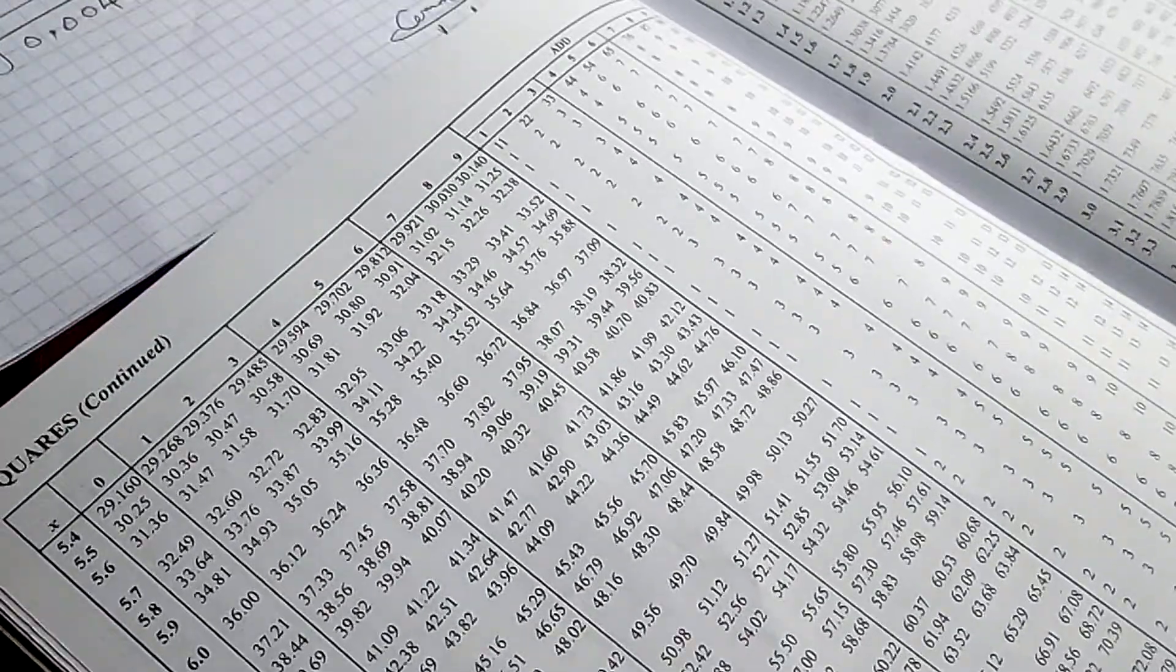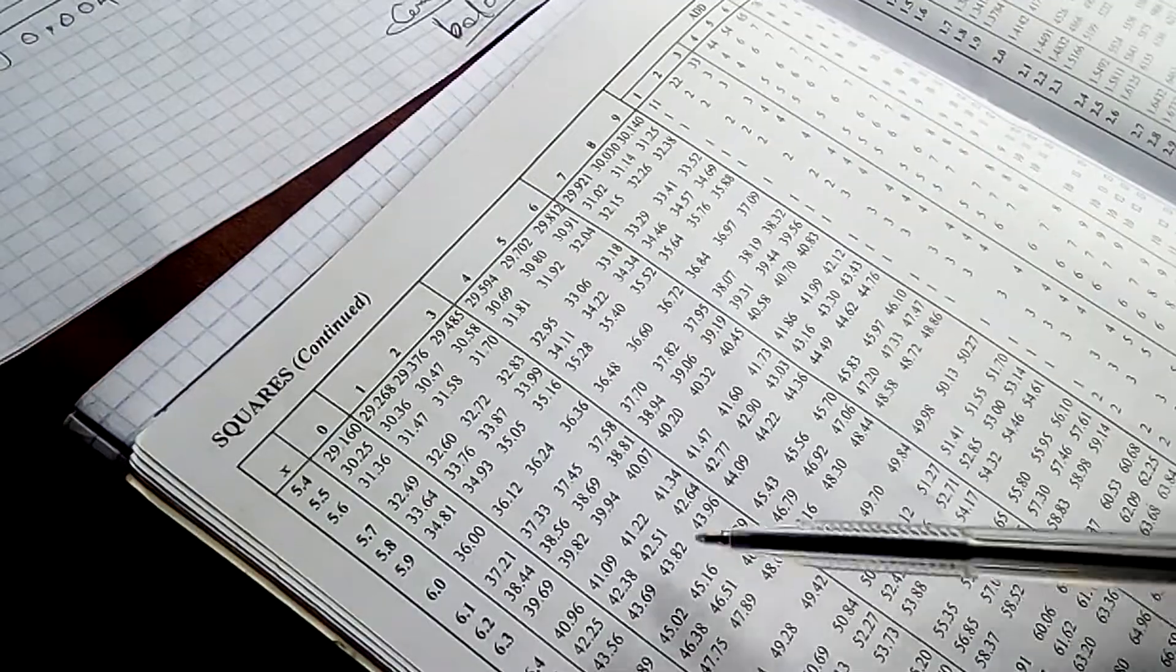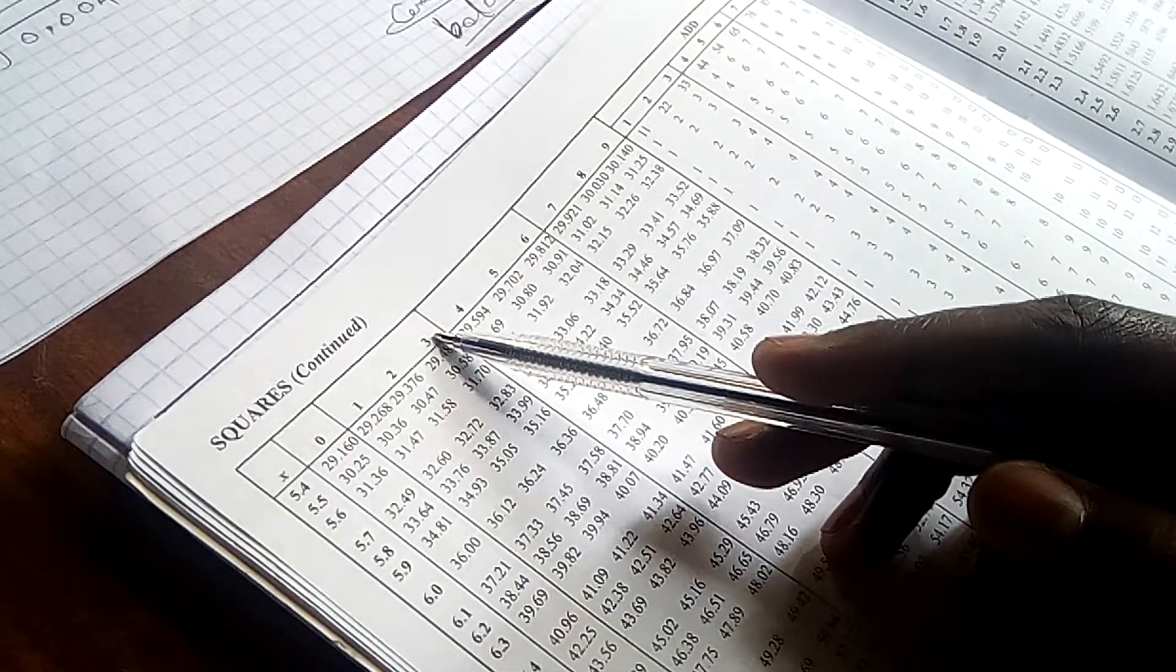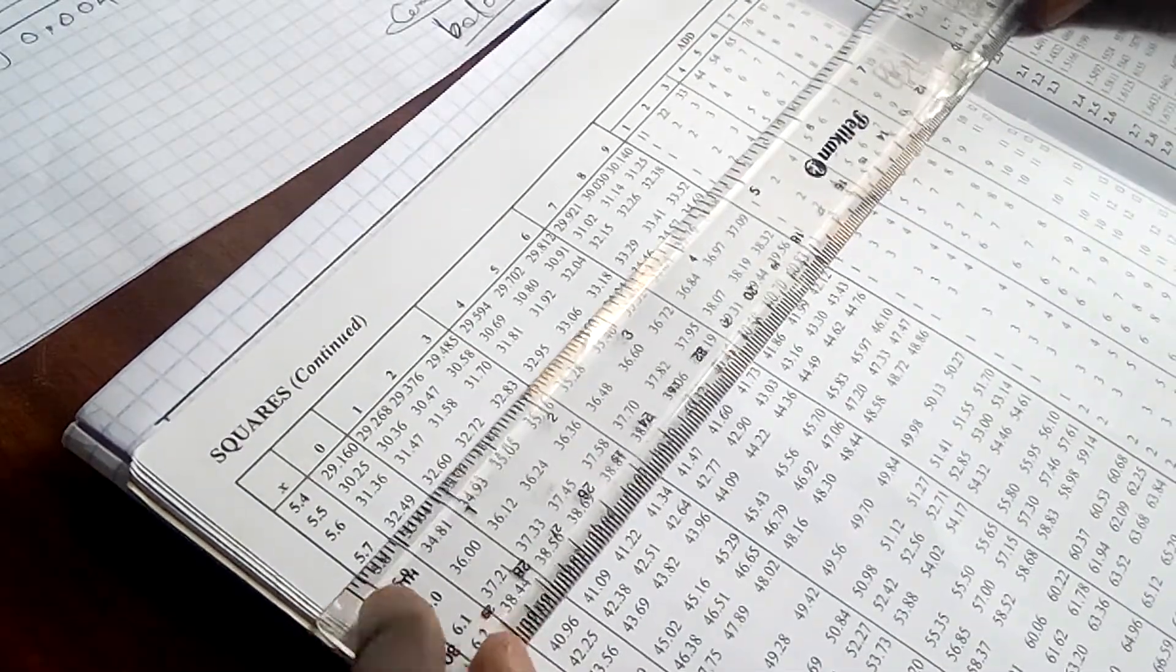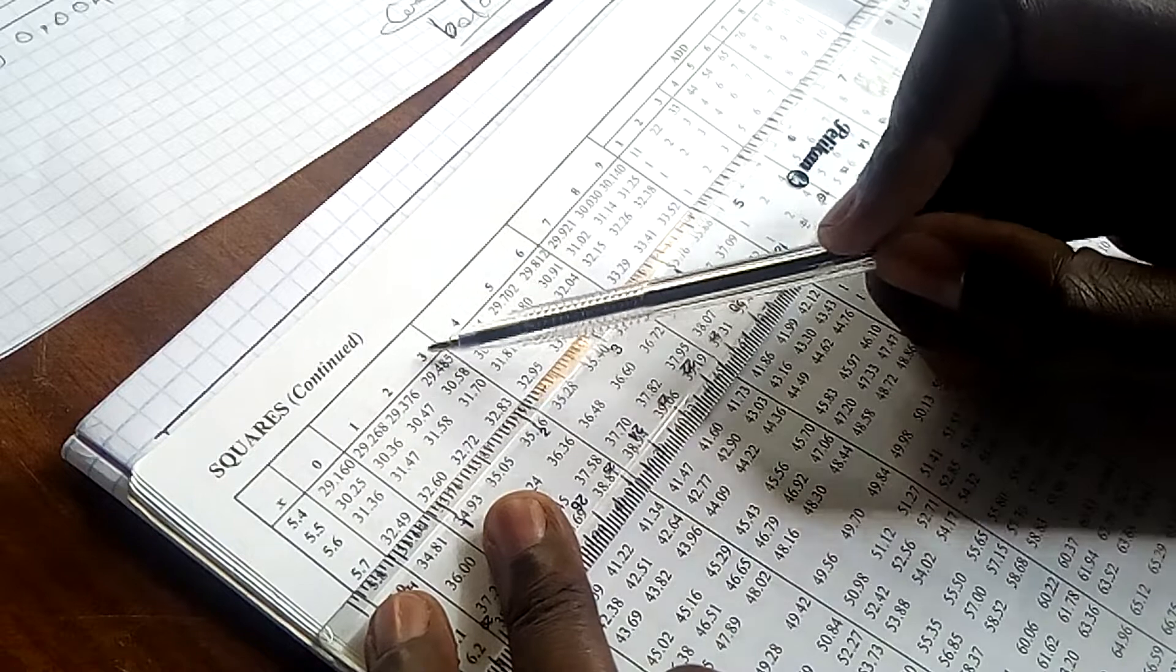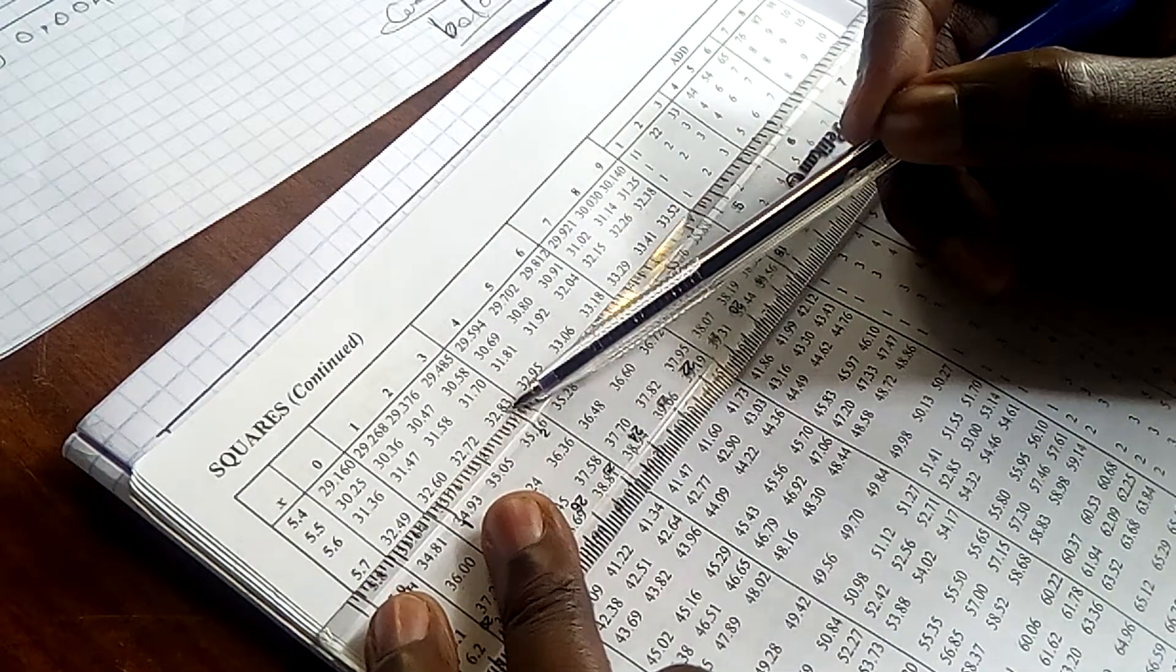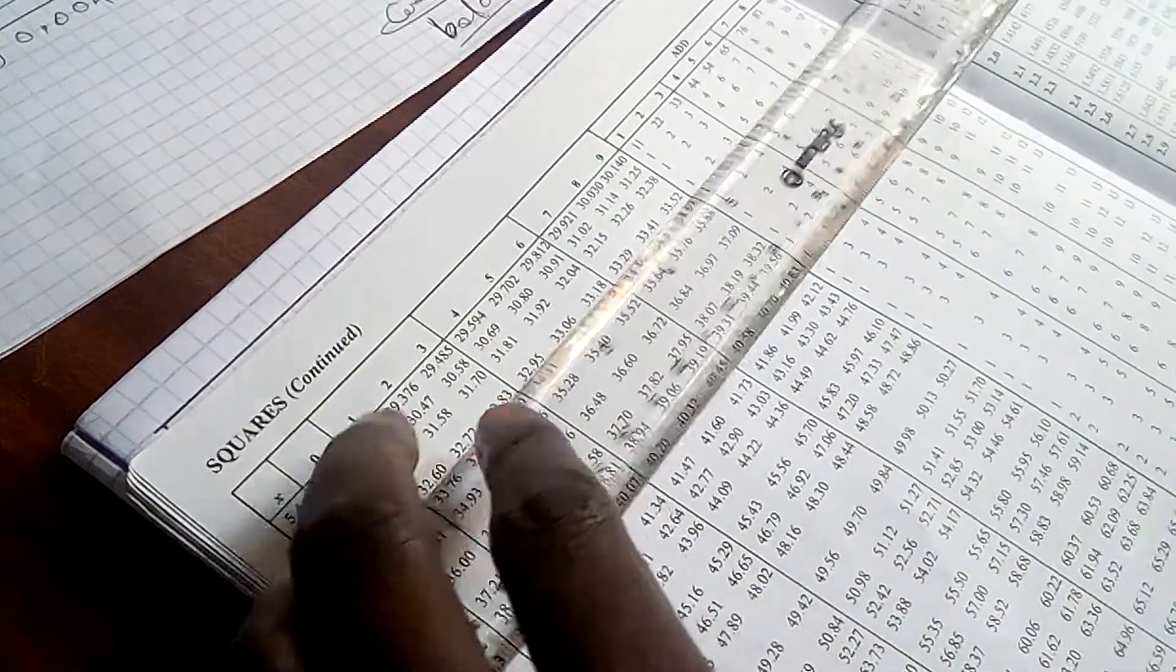You come to your table and look at where 5.73 is. Then what value coincides with that? So we have 5.7, then you look at where there is 3, so that we have 5.73. And the value that coincides there is 32.83 as you are seeing from your table.